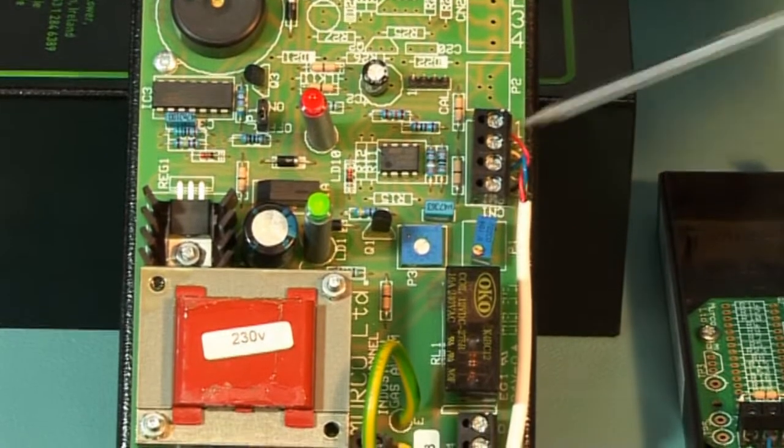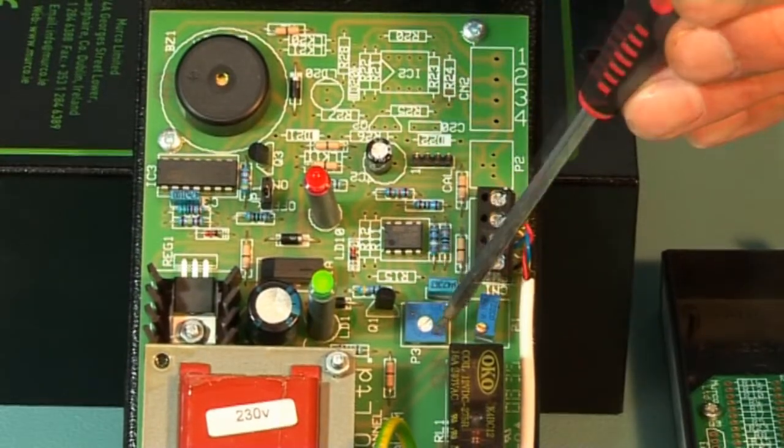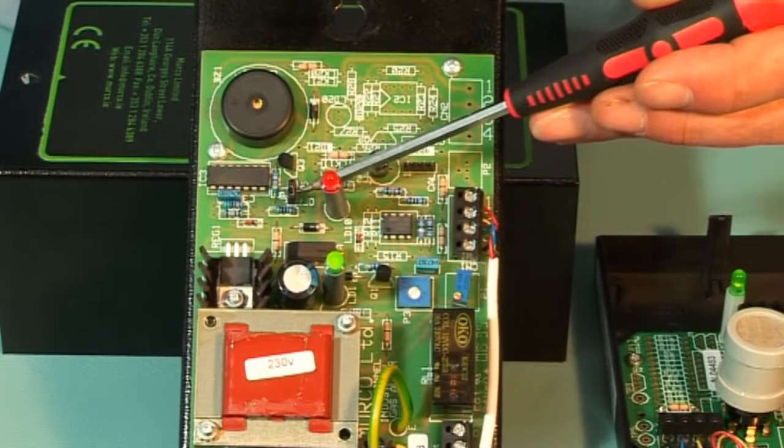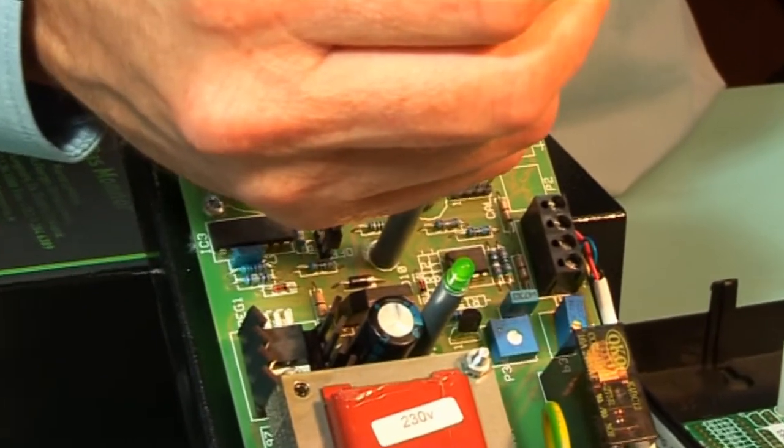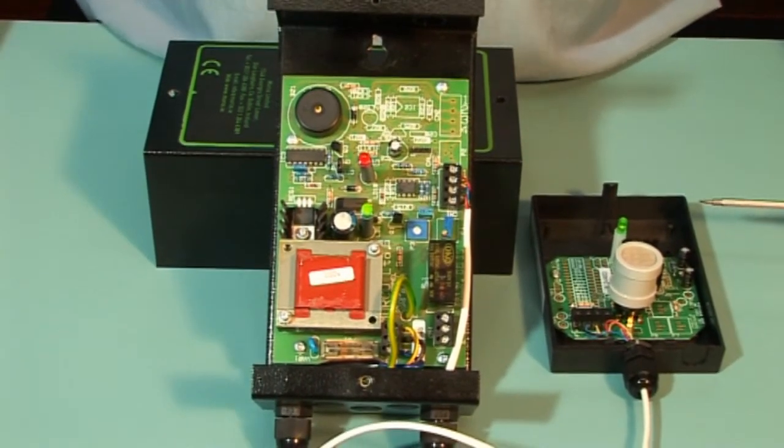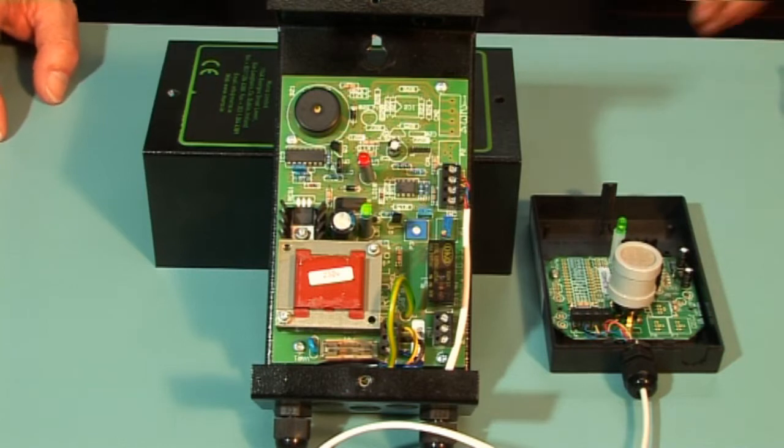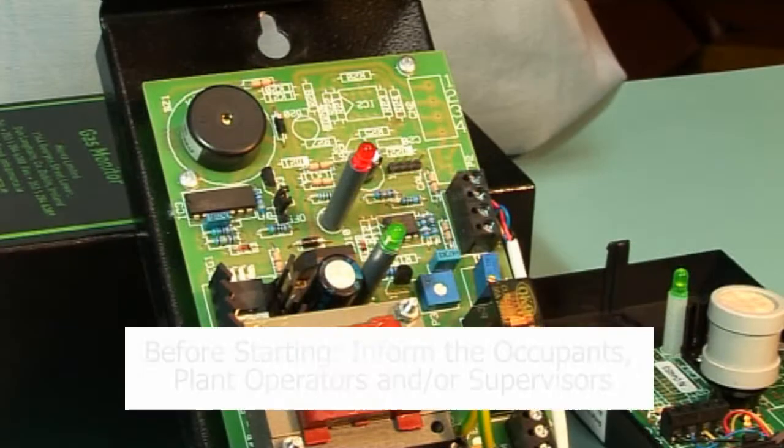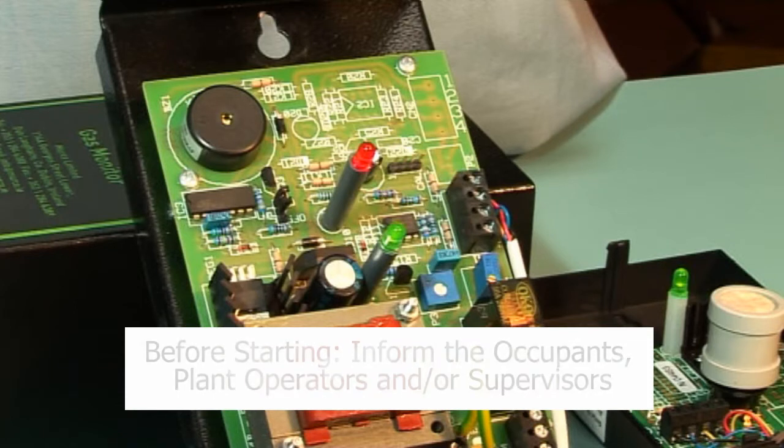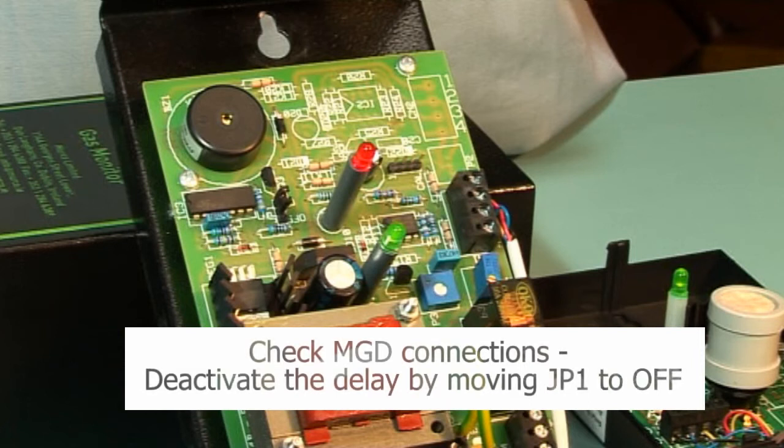The delay on the unit is set by jumper JP1 and should be moved to the off position to remove delay. The jumpers are normally red or black in color. Removing the jumper silences the sounder and disables the alarm relay. Before starting, inform the occupants, plant operators, and/or supervisors of the test. Check MGD connections to external equipment and disconnect if required. Deactivate the delay on level 1 system by moving jumper JP1 to the off position.